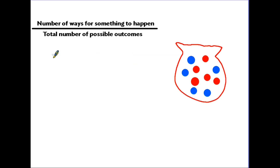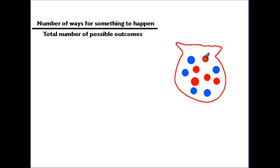Here comes the technical part. The actual formula for working out the probability of something happening is: the number of ways for something to happen divided by the total number of possible outcomes. Let's not worry too much about the wording — let's just see how it works. Here we have the bag mentioned earlier with coloured counters.